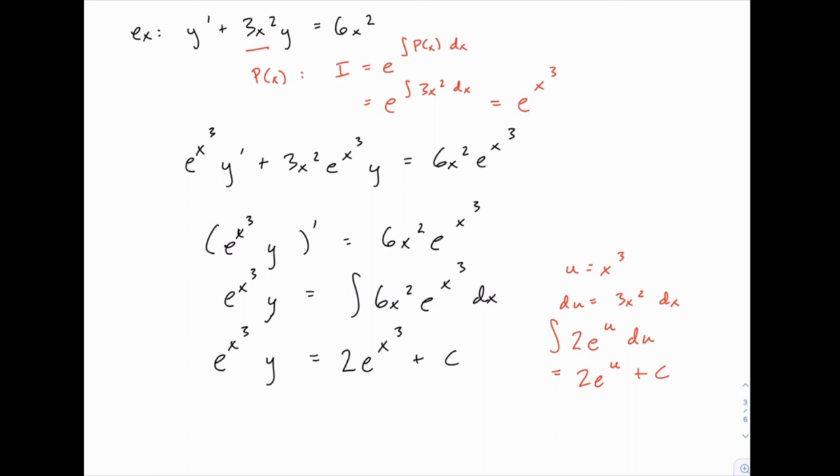Notice very carefully that the plus c occurs when we integrate, and that's important. Now when we solve for y and divide both sides by e to the x cubed, we get 2 plus c over e to the x cubed, or we could write this as c e to the negative x cubed if that's easier to read.